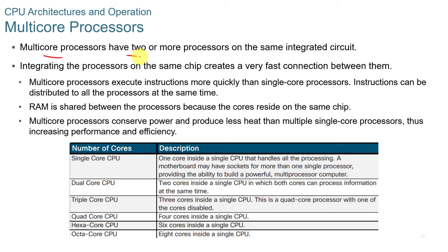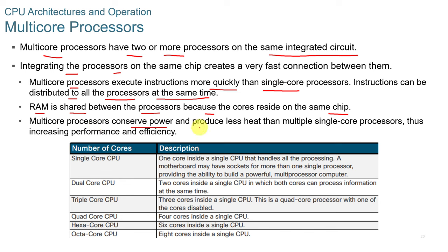Multi-core processors have two or more processors on the same integrated circuit. Integrating processors on the same chip allows for very fast connections between them, and instructions can be distributed to all processors simultaneously. RAM is shared between processors because the cores reside on the same chip. Multi-core processors also conserve power and produce less heat than multiple single-core processors. Core types include single-core, dual-core, triple-core, quad-core, hexa-core, and octa-core (eight cores).